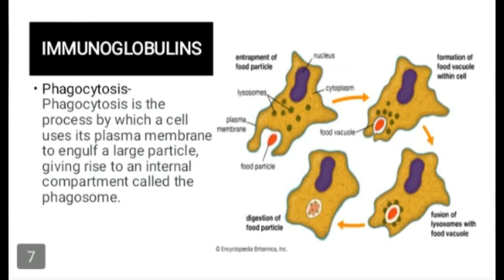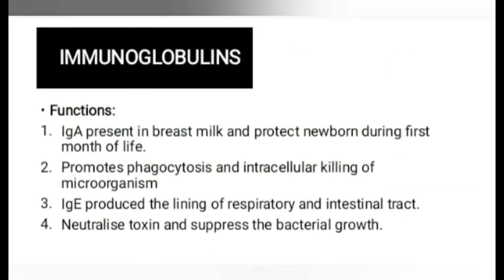This picture shows the full cycle of phagocytosis. Going back to the functions of immunoglobulins: immunoglobulin E produces a lining of the respiratory and intestinal tract, neutralizes toxins, and suppresses bacterial growth.